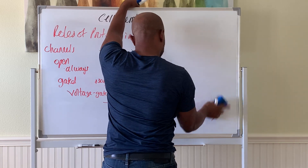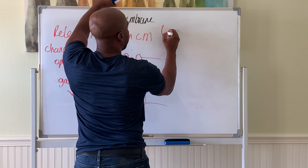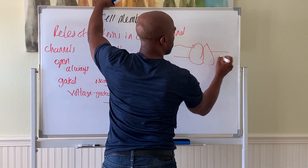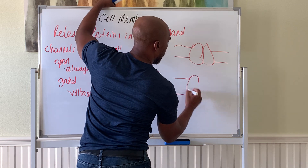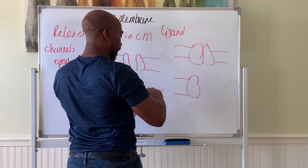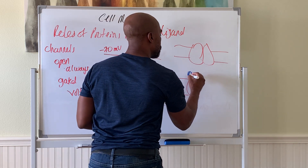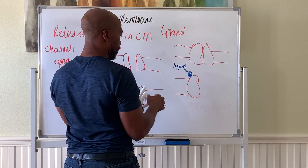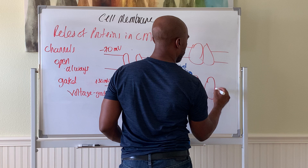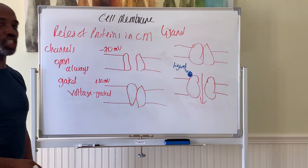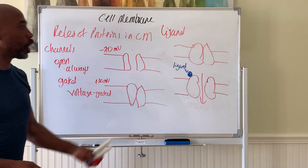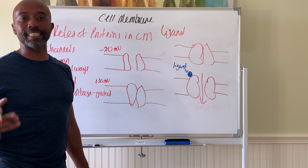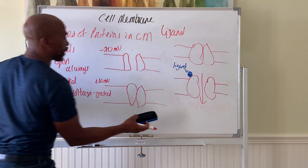The second type is ligand gated channels, also called chemical gated channels. The channel may be closed, but when a ligand or chemical binds to it — acting like a receptor — it then opens up so things can pass through. This is how many drugs work: they act as a ligand to open or close channels on cell membranes to alter cell function.